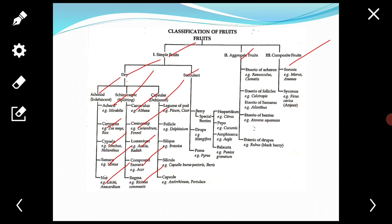Regma: the mature fruit breaks into one seeded dehiscent parts called cocci. Example: Ricinus communis.